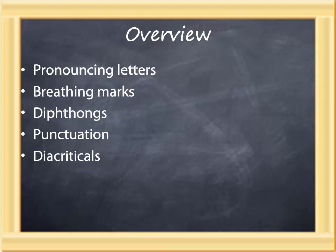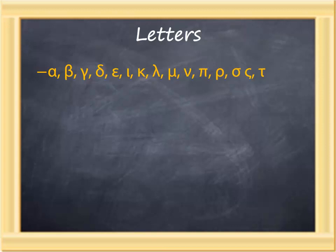Today's lesson covers additional factors necessary for the pronunciation of Koine Greek using a system that developed in the Renaissance. It's important with a dead language like Koine Greek to still pronounce it, as that additional sense helps in the learning. We'll look at pronouncing letters, breathing marks, diphthongs, punctuation, and diacriticals. One of the best ways to learn the Greek alphabet is to pronounce the letters out loud as you write them down.